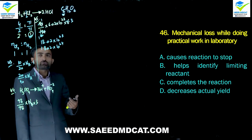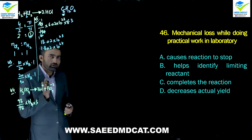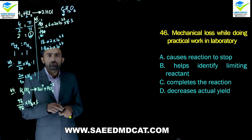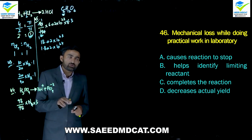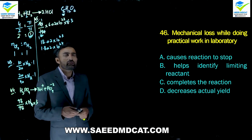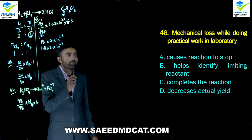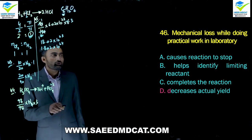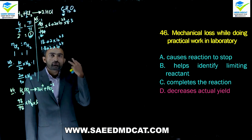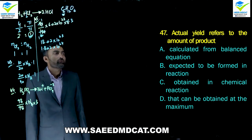Question 46: Mechanical loss while doing practical work in the laboratory does what? It does not help identify limiting reactant (that's determined from the balanced equation). It does not speed up or slow down the reaction. Delta option is correct: mechanical loss decreases actual yield, along with inexperienced workers and side reactions.